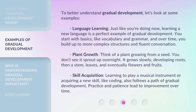To better understand gradual development, let's look at some examples. Language learning: just like you're doing now, learning a new language is a perfect example of gradual development. You start with basics like vocabulary and grammar, and over time, you build up to more complex structures and fluent conversation.